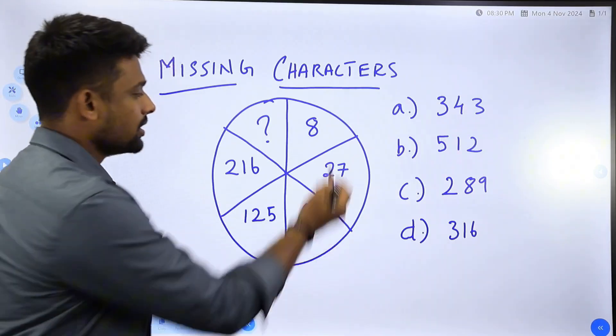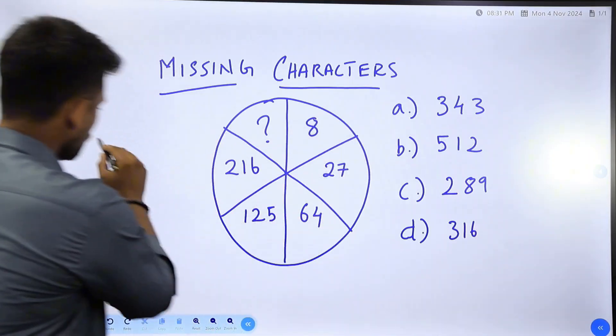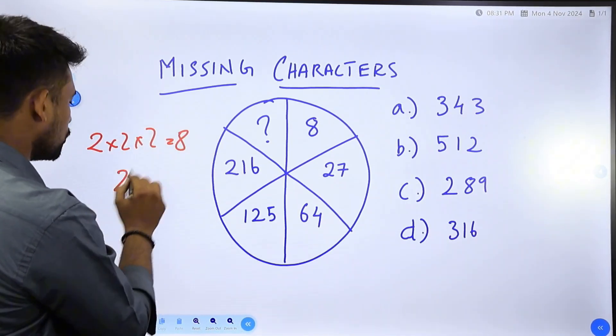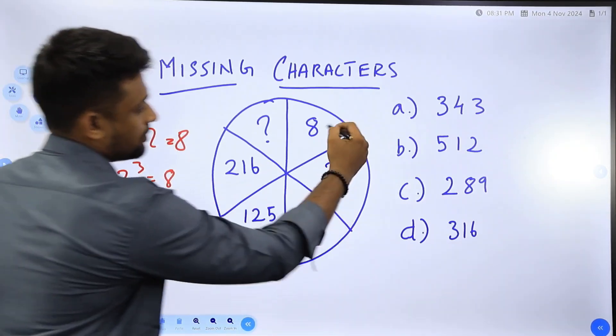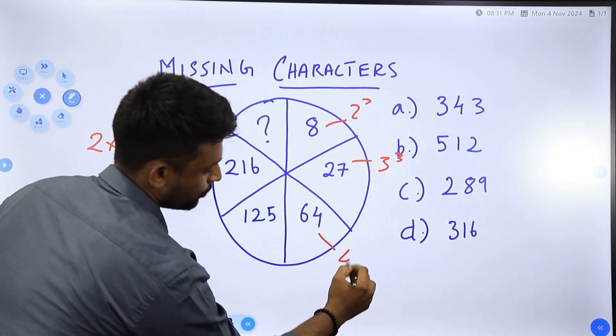Simple cube numbers: 8 is 2 cube, so 2 into 2 into 2, that is 8. This is 2 cube, this is 3 cube, this is 4 cube.